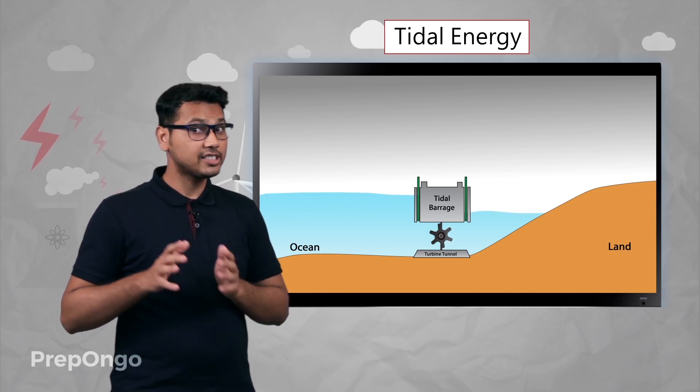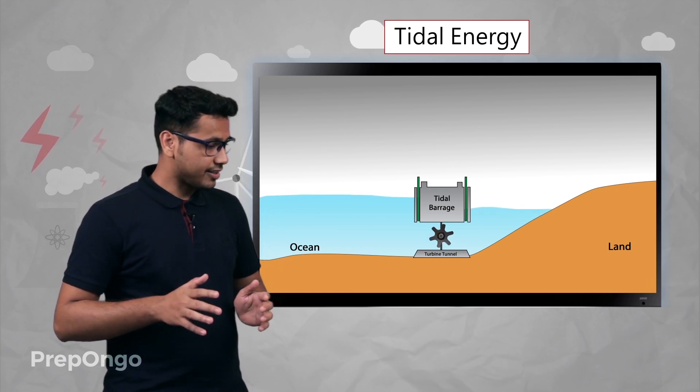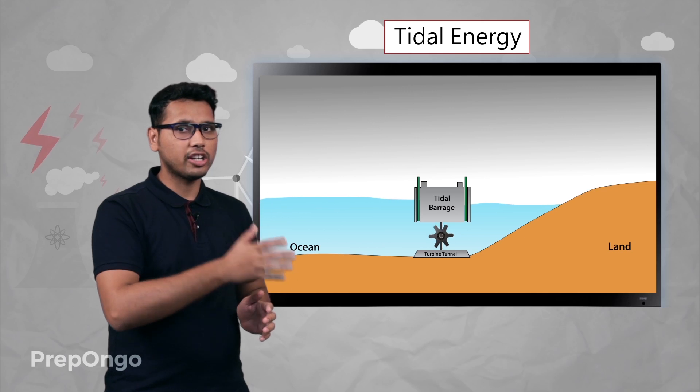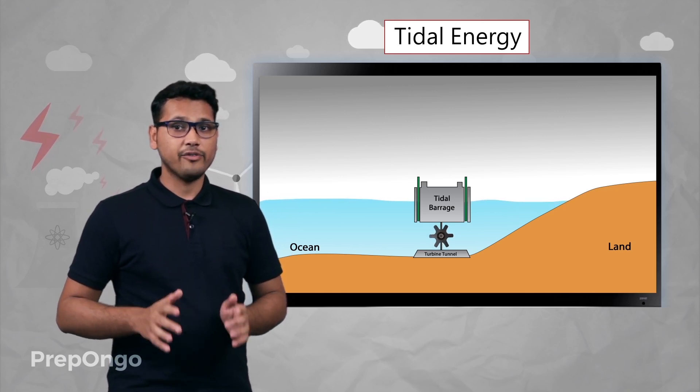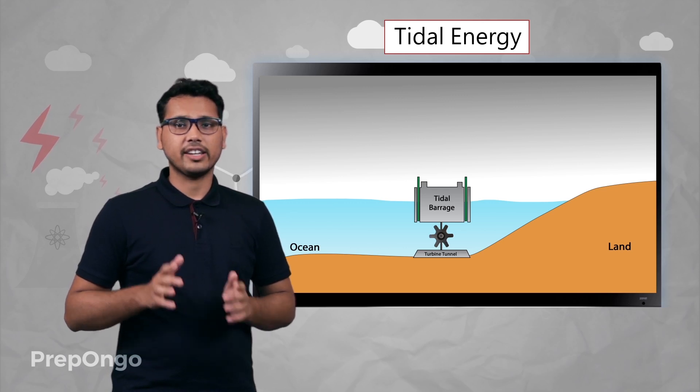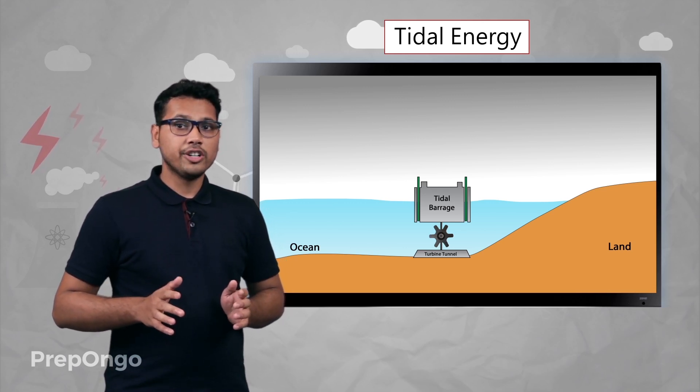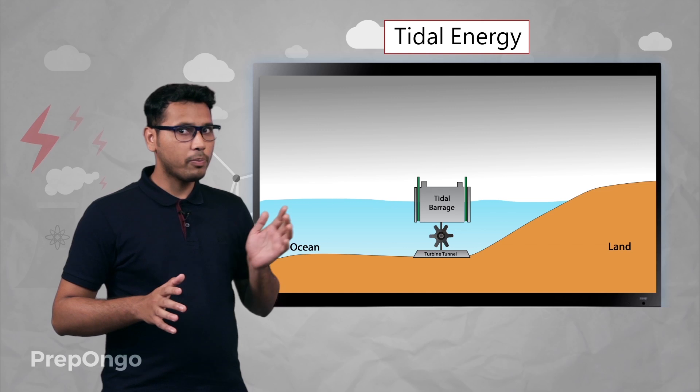So when the gates are opened, water rushes from the sea into the reservoir, and hence a turbine rotates. When the turbine rotates, we get electricity. So during high tide when we open the gates, water flows from the sea to the reservoir.